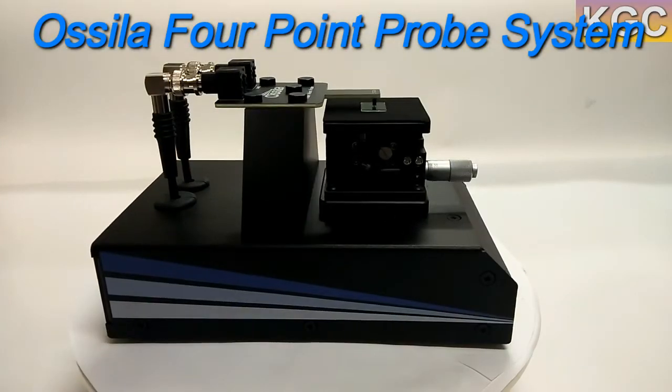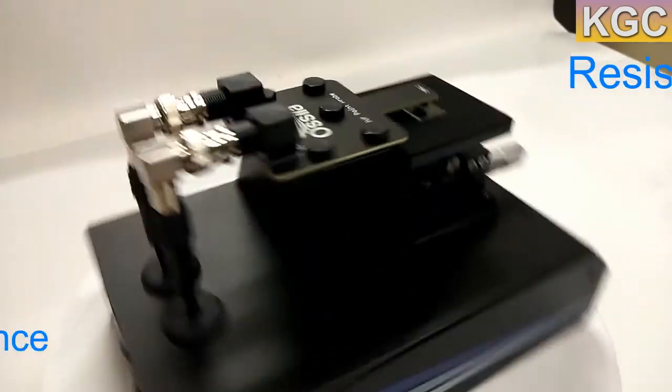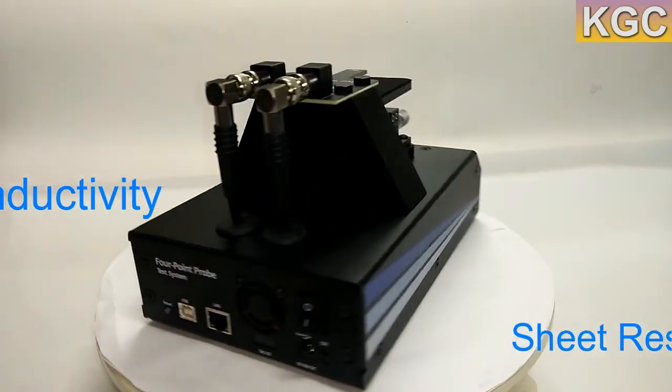In order to avoid this, meet the Oscillus 4-point probe system, an easy-to-use tool for the rapid measurement of sheet resistance, resistivity, and conductivity of materials.